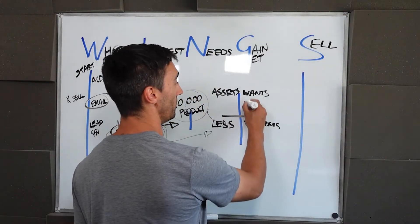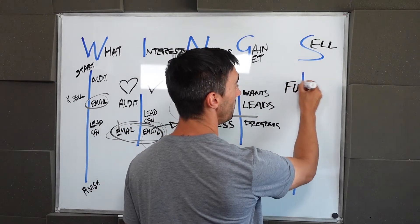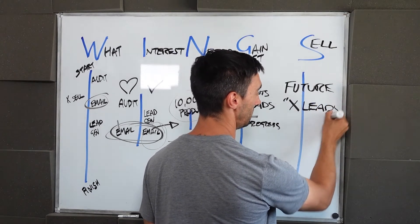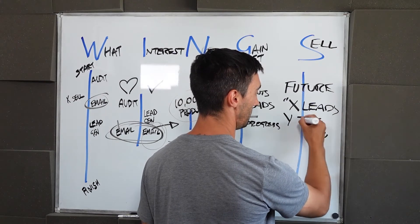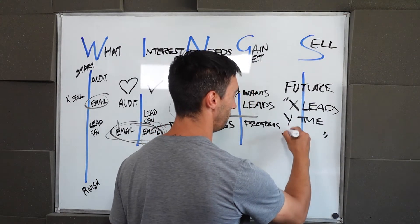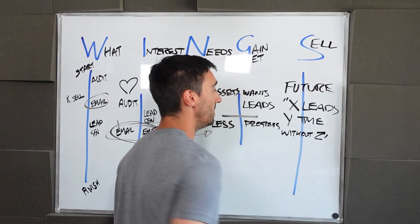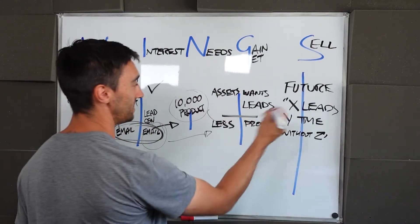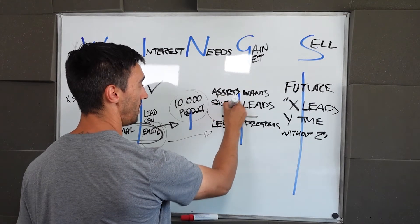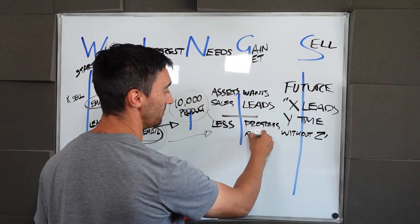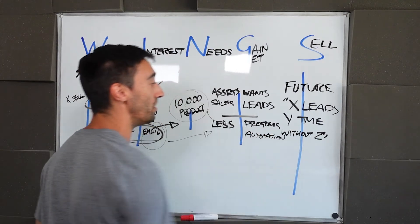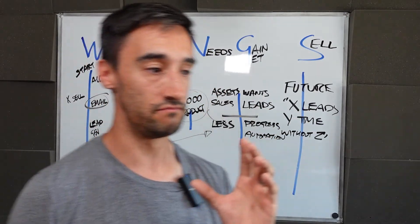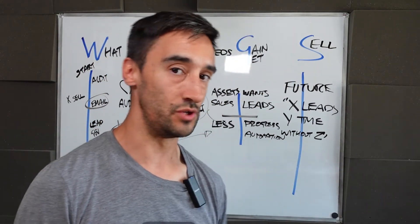But specifically the future that you will achieve is X number of leads in Y time. And if you want a bonus point, you put without Z. Now let's say that through all of this, let's use our email marketing example. One of the things that will actually have assets, for example, is product sales and their progress is maybe on automation. They're like, I'd love to have an automated business. What if we were now able to say, well, how about I generate you 10 new sales within 10 days without having to do a bunch of cold lead generation?